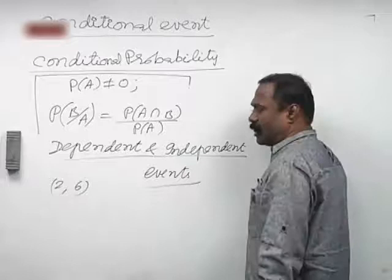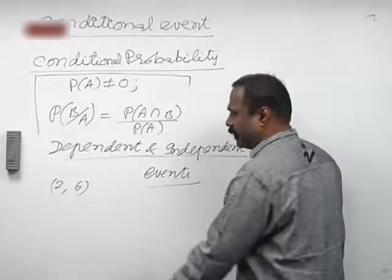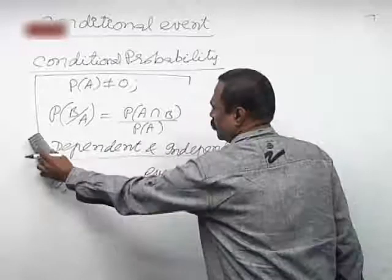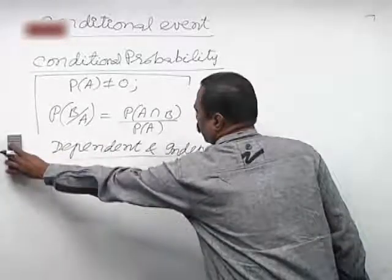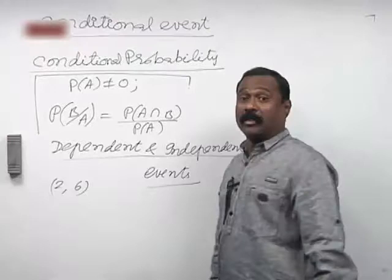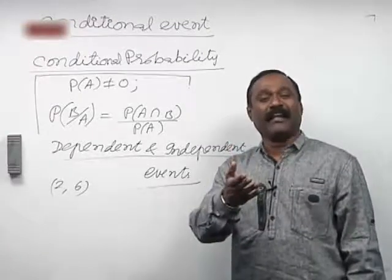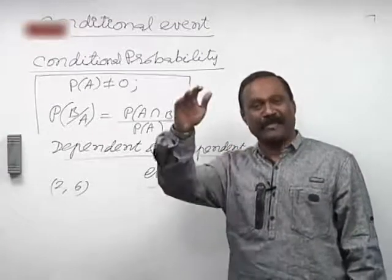Let me correct it. I wrote 1, 7 — that's wrong, because the die contains only a maximum of 6.